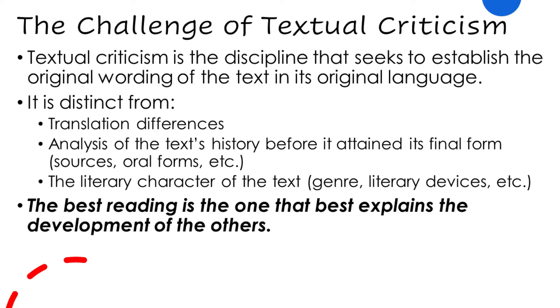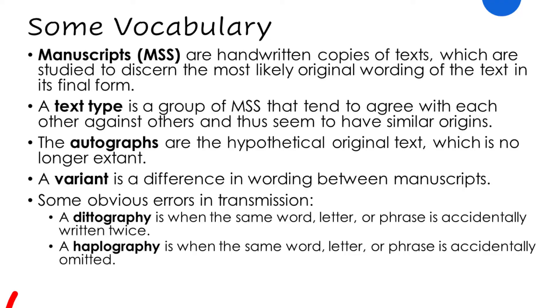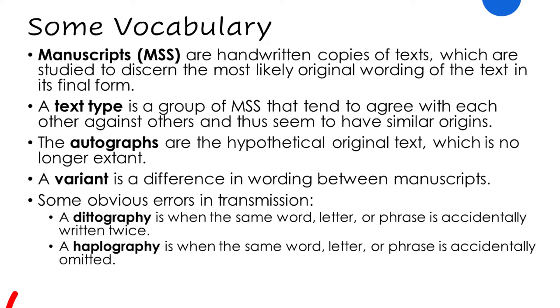Our task is to figure out what words were in the original. The key principle of textual criticism is that when presented with different variants — different wordings of the same text — the best reading is the one that best explains how the others developed. Manuscripts are handwritten copies of texts, studied to discern the most likely original wording. A text type is a group or family of manuscripts that tend to agree with each other and share a common origin.